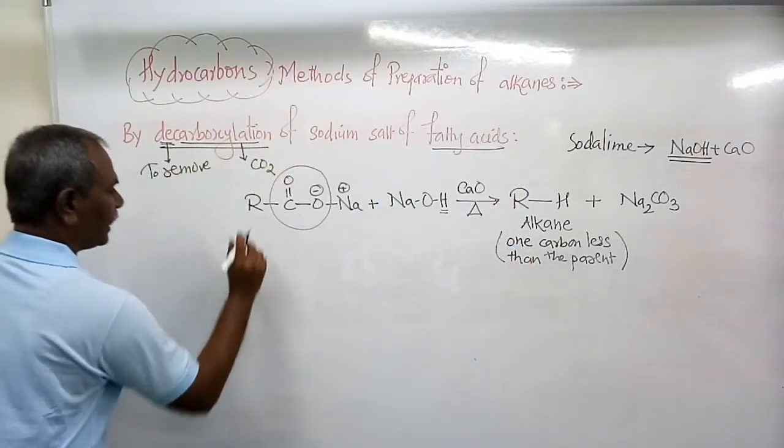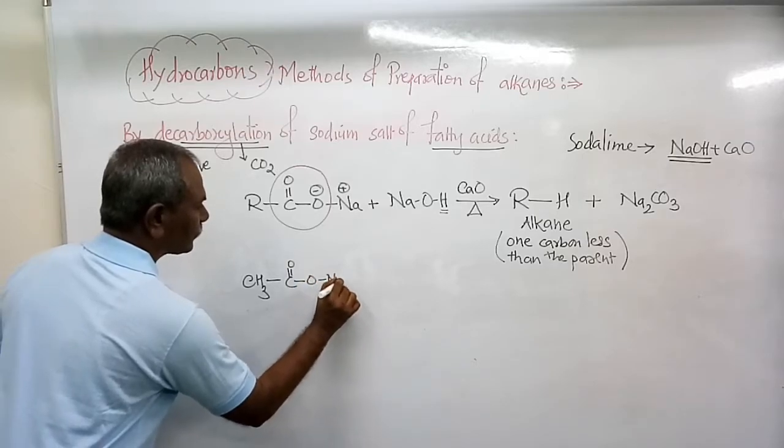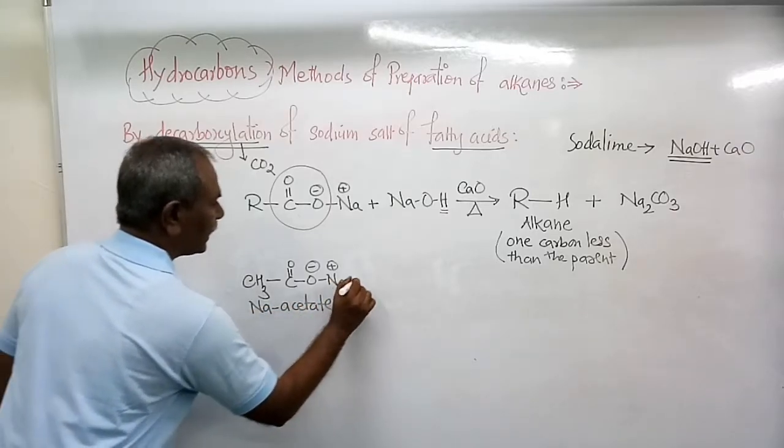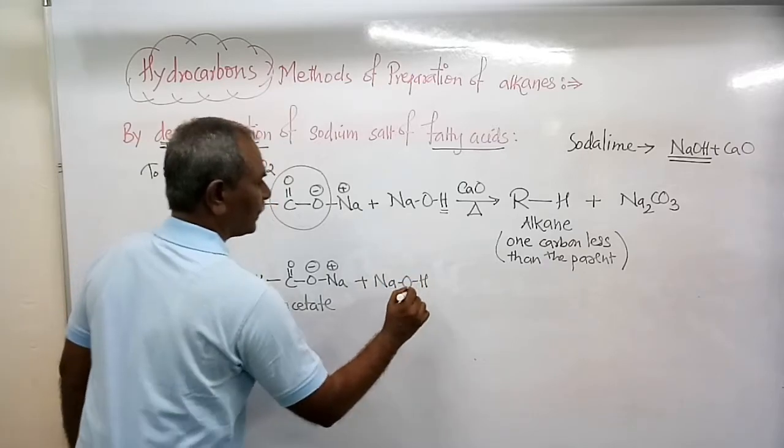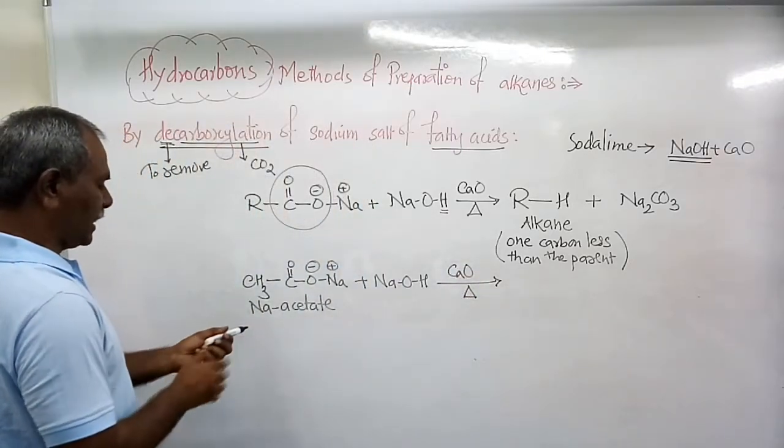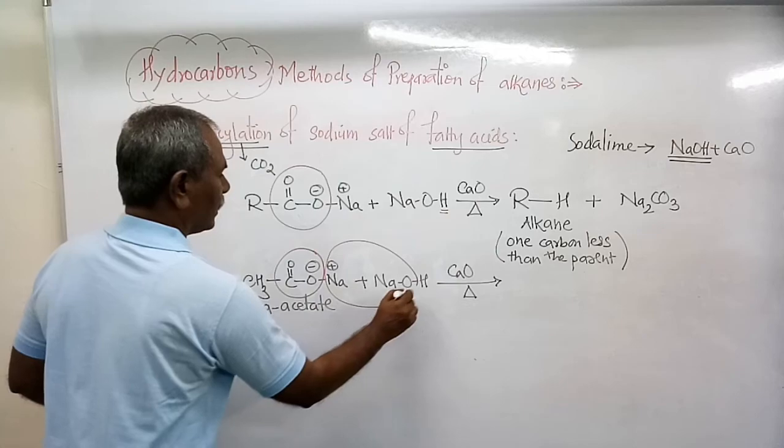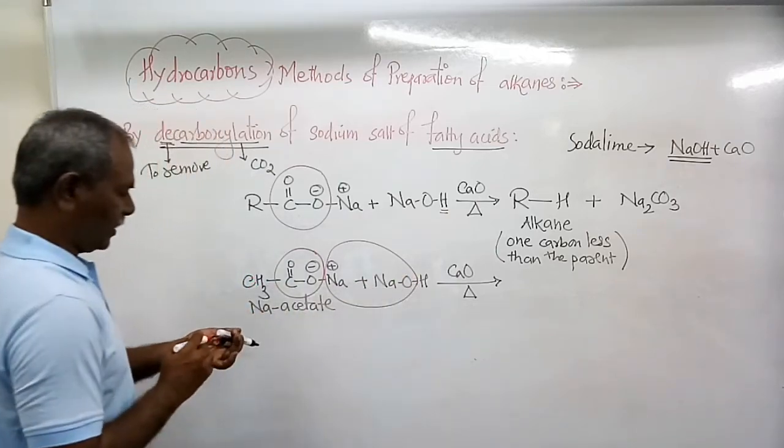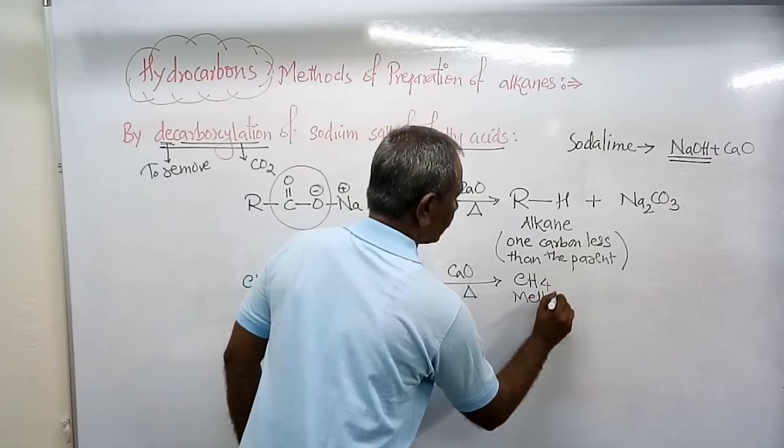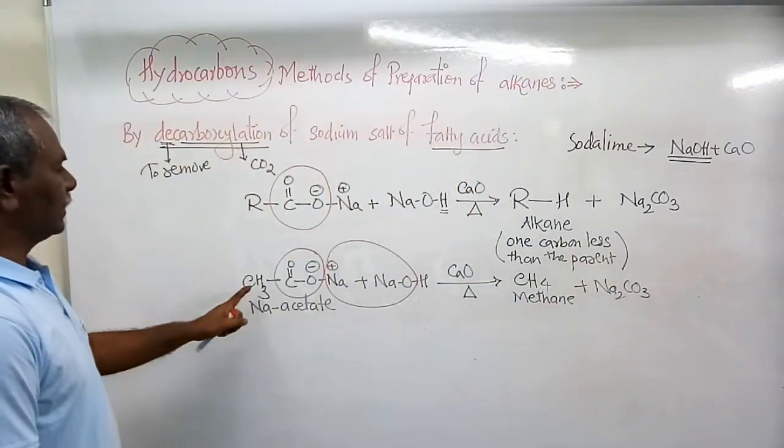For example, CH3-C double bond O-ONa (sodium acetate) plus sodium hydroxide in presence of calcium oxide gives CO2, Na2O, and CH4 methane plus sodium carbonate. This is methane, which has one carbon less than the parent.